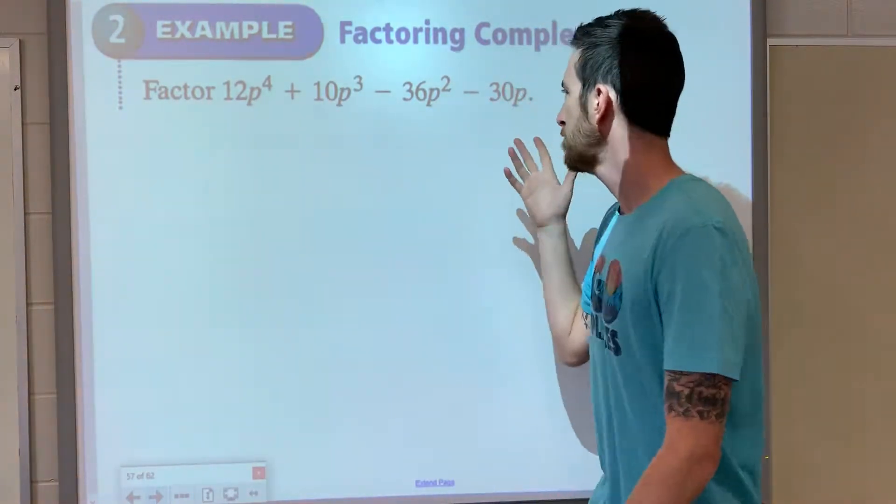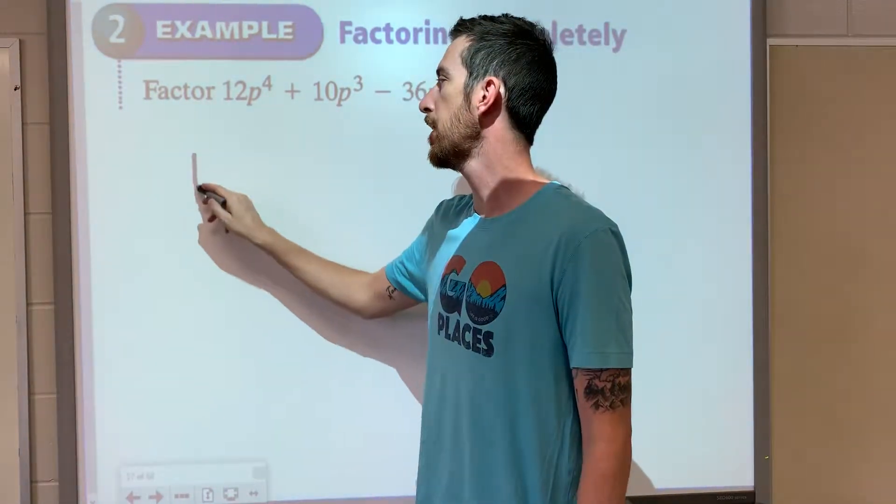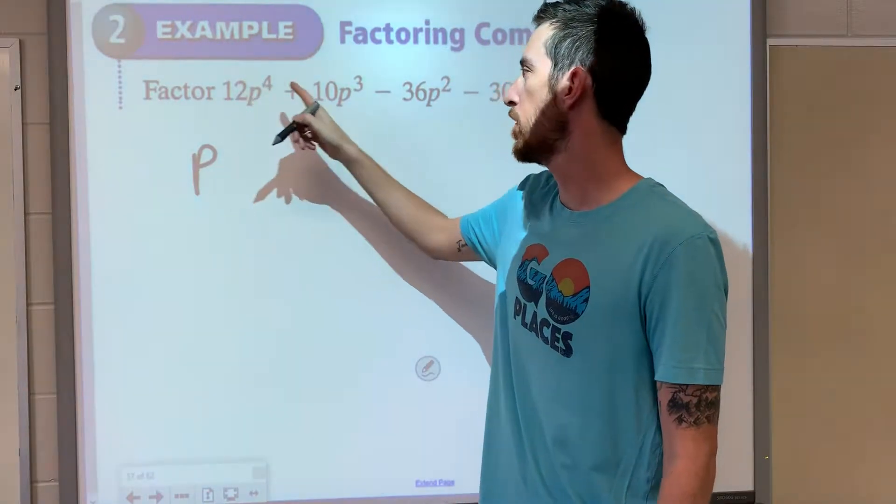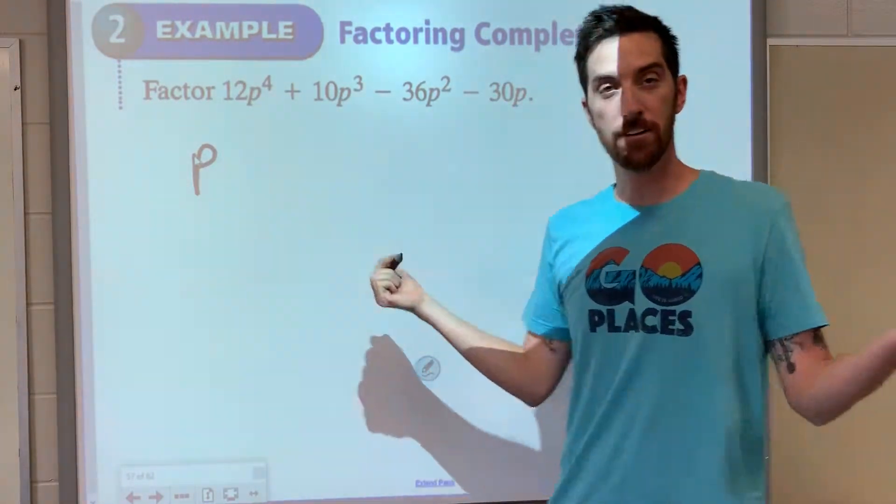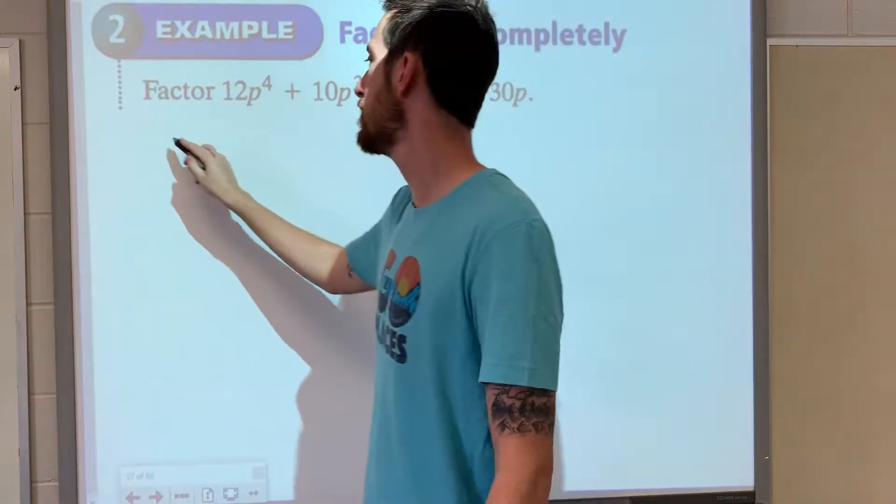Do they all have p? Yeah, they all have at least p to the 1st power. How about the other numbers? 12 and 10, 36 and 30, they're all even. So 2 goes into all those.